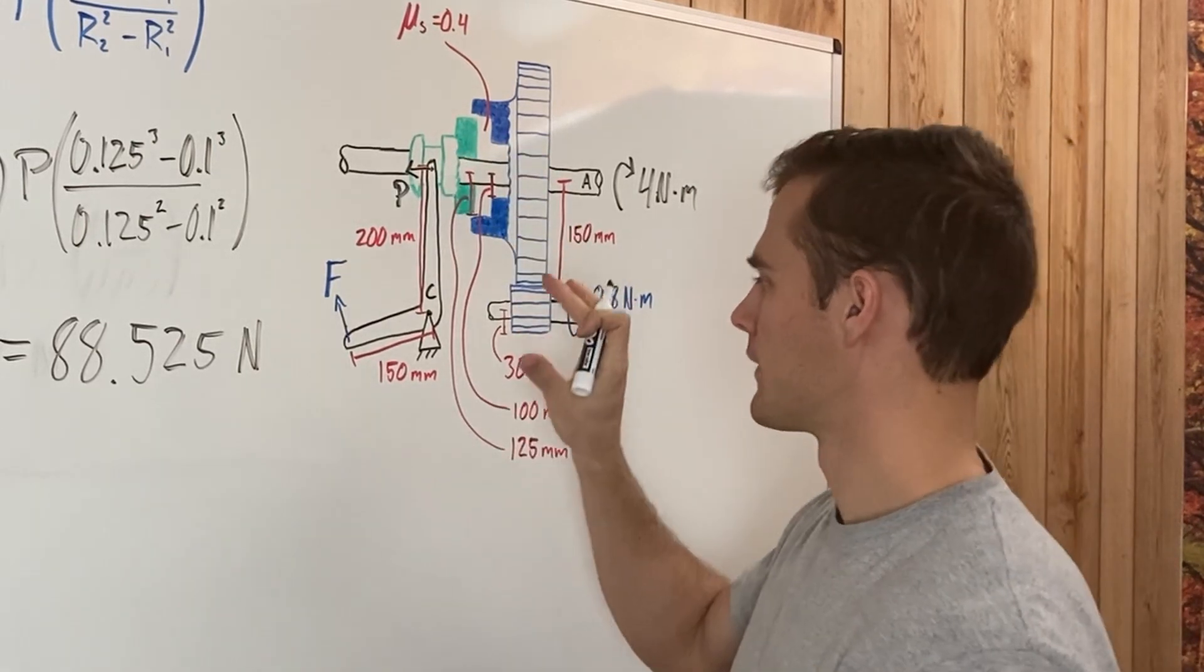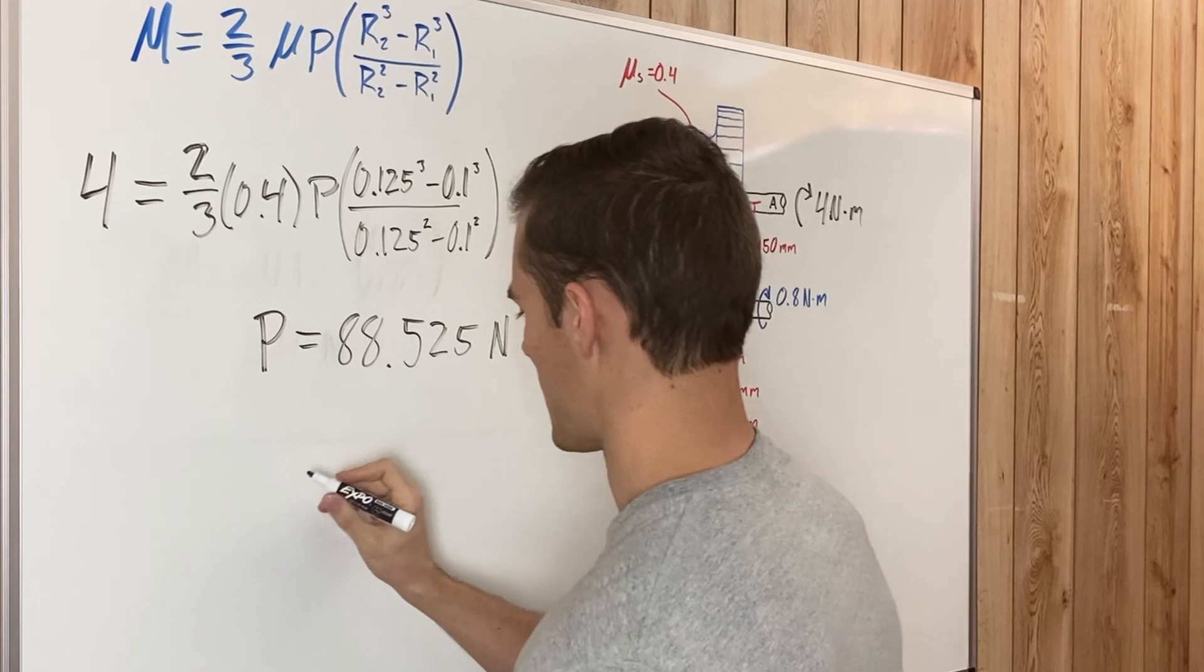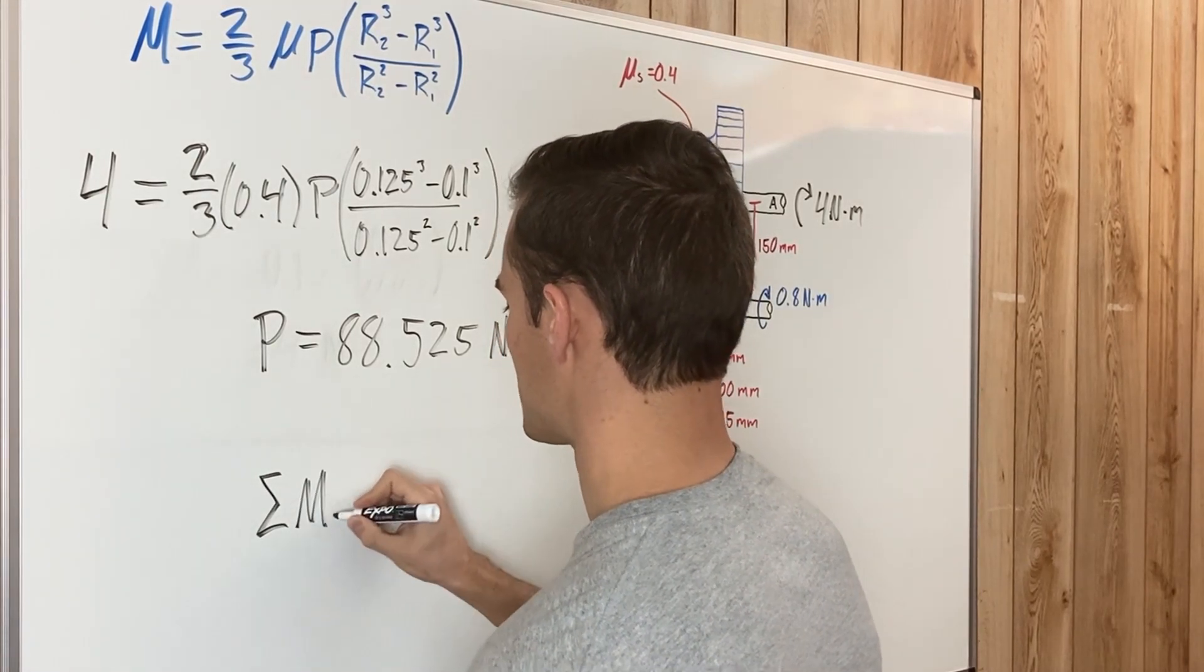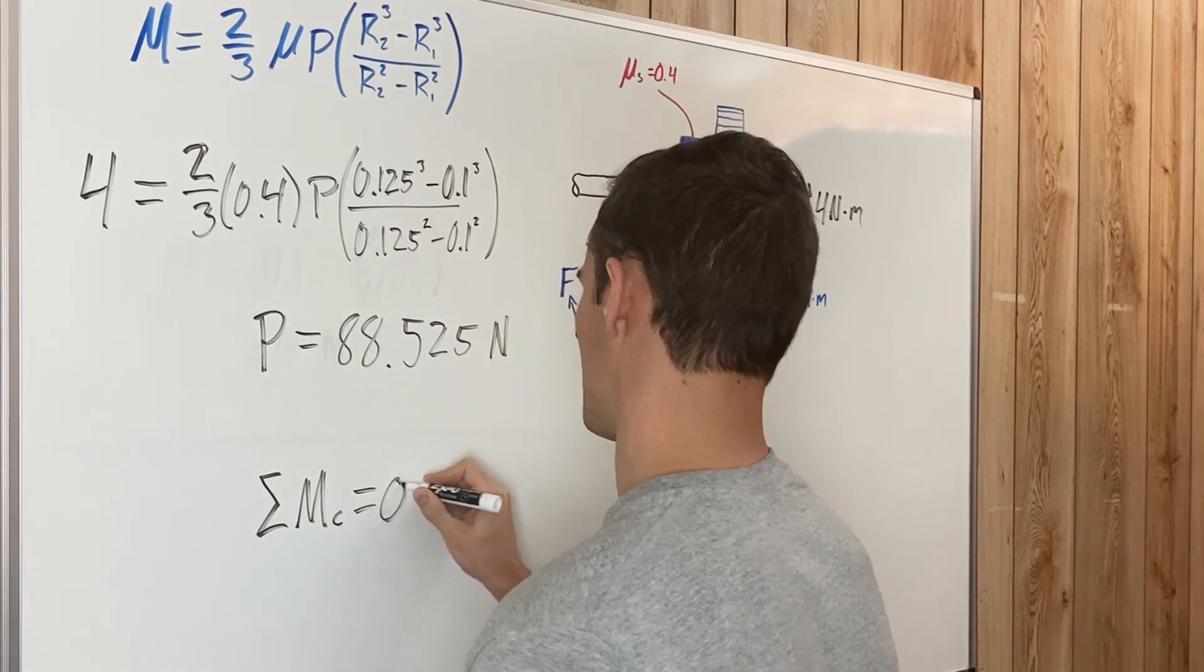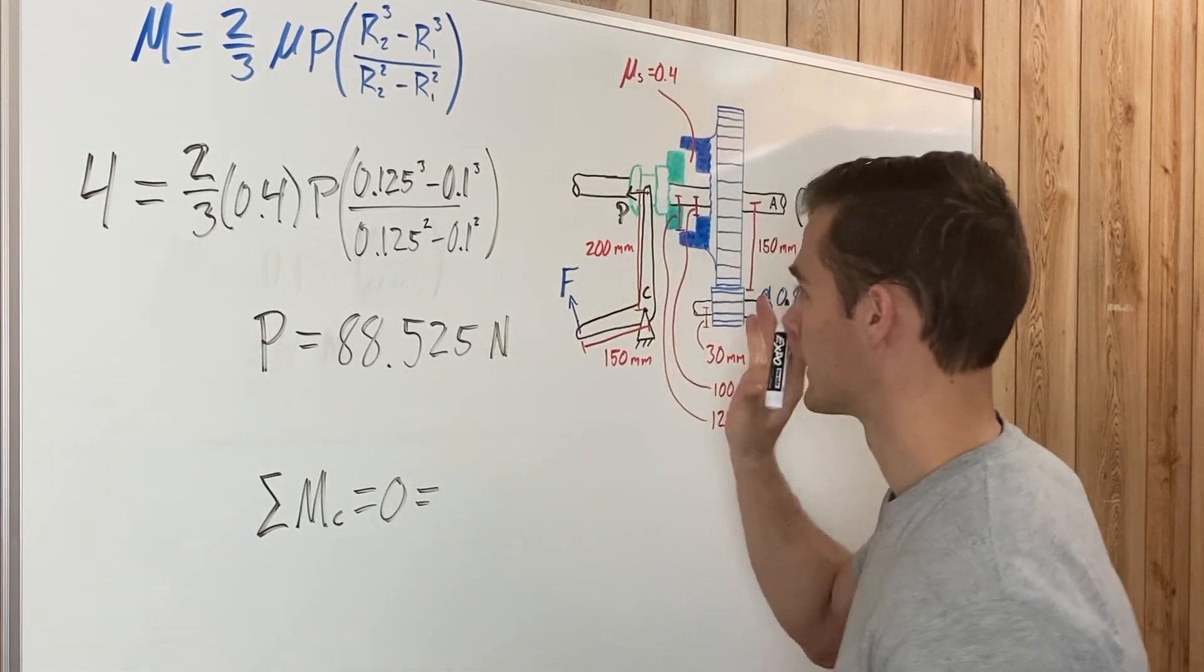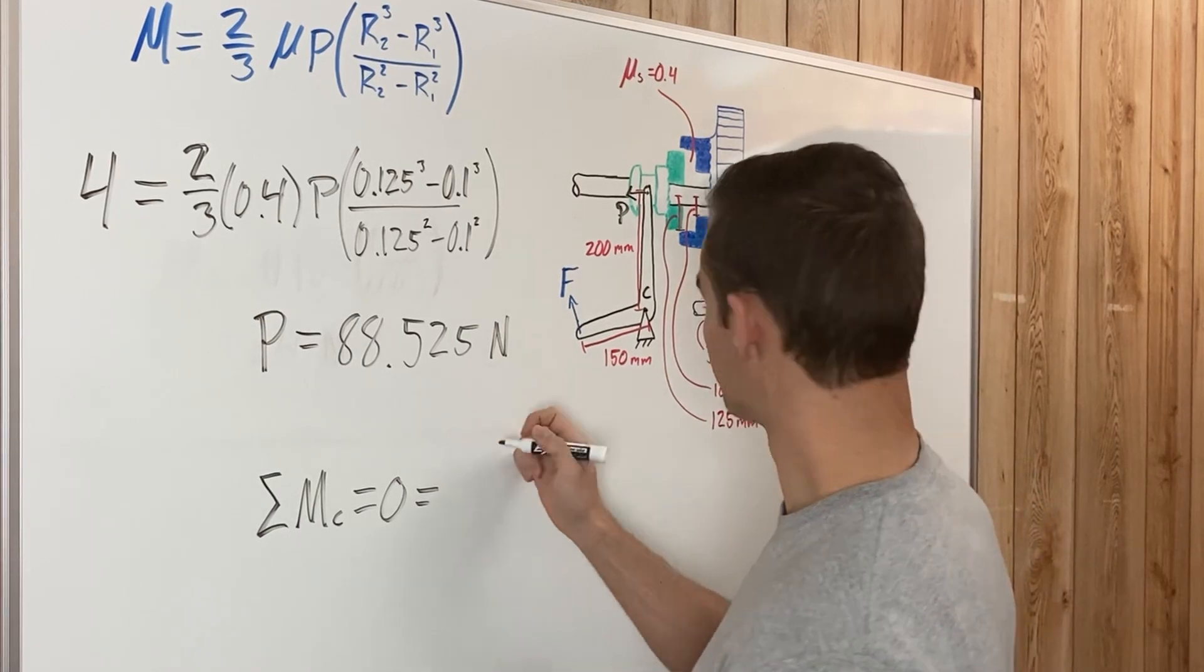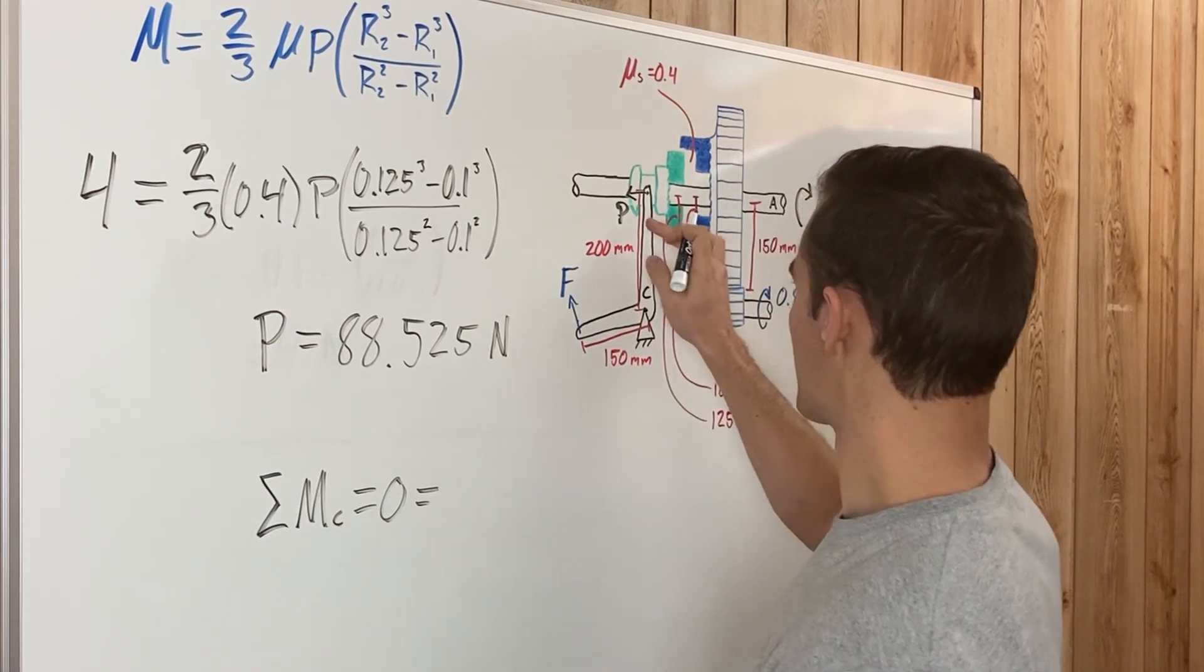If we sum moments about point C, we can find F. We say the sum of the moments about point C equals zero because once again we're saying that it's in equilibrium. So we have force P.